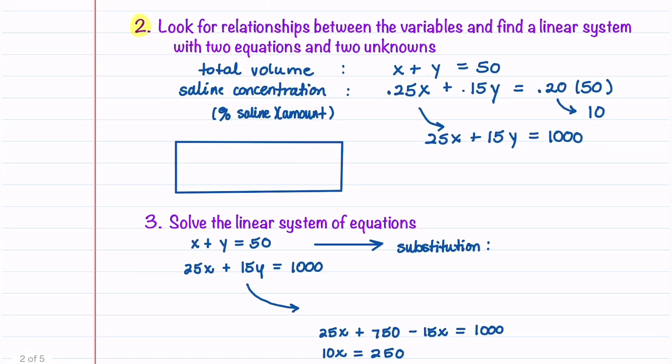So our two equations are x plus y equals 50, and 25x plus 15y equals 1000.